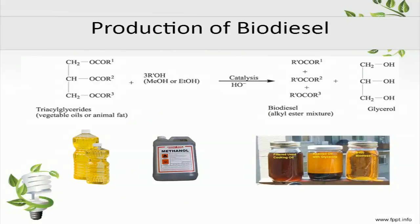Biodiesel, on the other hand, is a biofuel equivalent of diesel fuel and is produced in a reaction known as transesterification. Vegetable or animal oil is reacted with methanol using a base catalyst to produce biodiesel and glycerol. Glycerol is a material used in the soap-making process. The video you're about to see details the steps involved in the creation of biodiesel from waste oil.